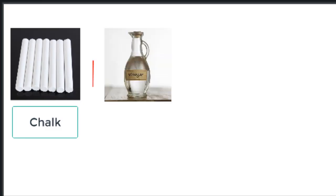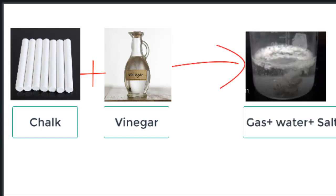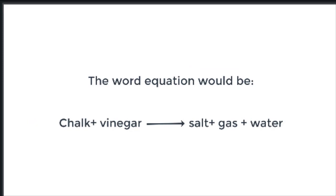Going back to the reaction between chalk and vinegar, chalk and vinegar were the reactants, and gas, and water, and salt were the products. Then the word equation would be chalk plus vinegar, arrow, salt, plus gas, plus water.